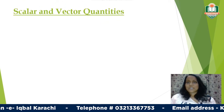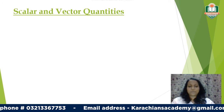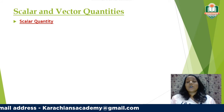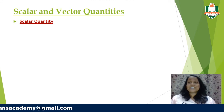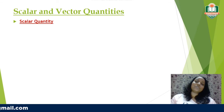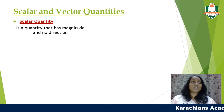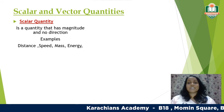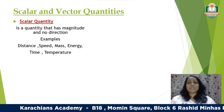Now for a brief discussion of scalar and vector quantities. Physical quantities are also divided into scalars and vectors. A scalar quantity has magnitude only, with no direction. Examples include distance, speed, mass, energy, and time.